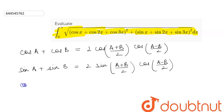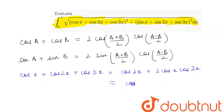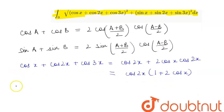Considering cosx + cos2x + cos3x, we apply the formula to cosx + cos3x, which gives cos2x + 2·cosx·cos2x. Taking cos2x as common, we are left with cos2x·(1 + 2cosx).